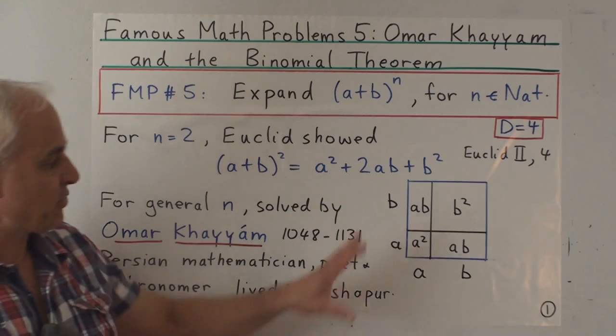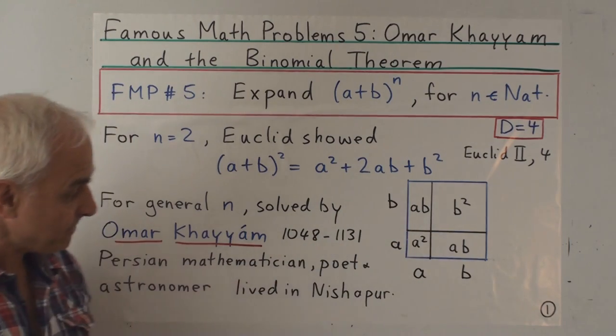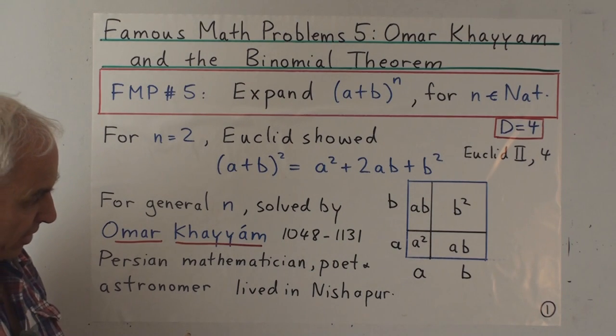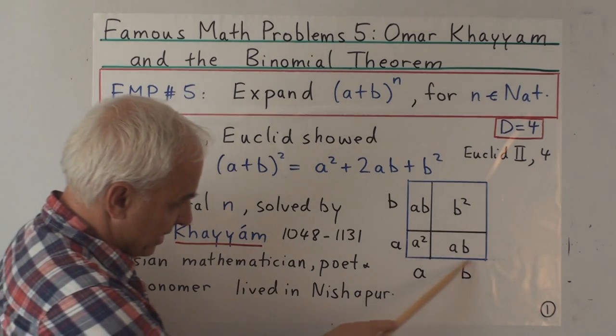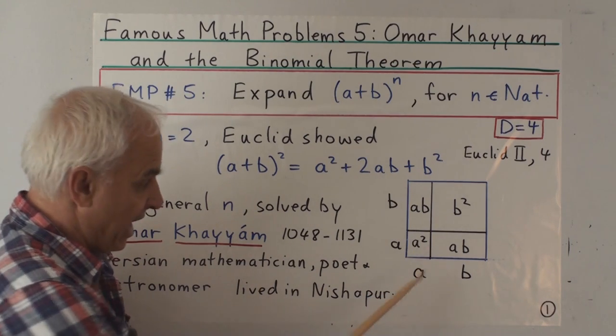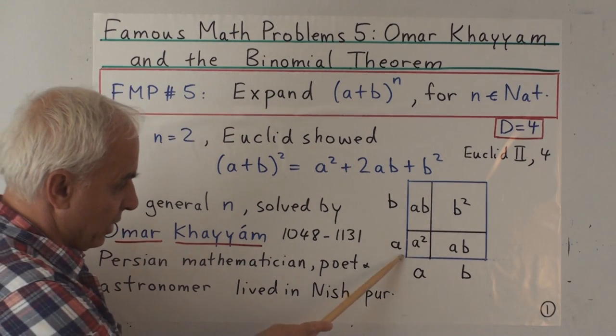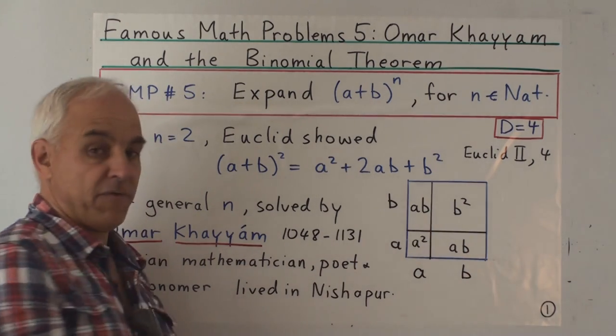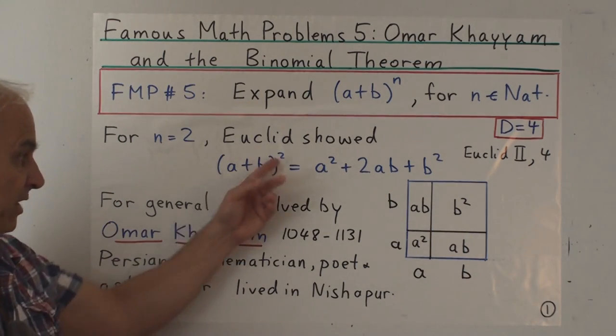So for the ancient Greeks, this was primarily a geometrical result, which was encoded by this little picture here. We have a square, and the sides here have subdivisions into segment a and another segment b. There's an equal segment a and an equal segment b. And we can see that the area of this square, which is a plus b squared,